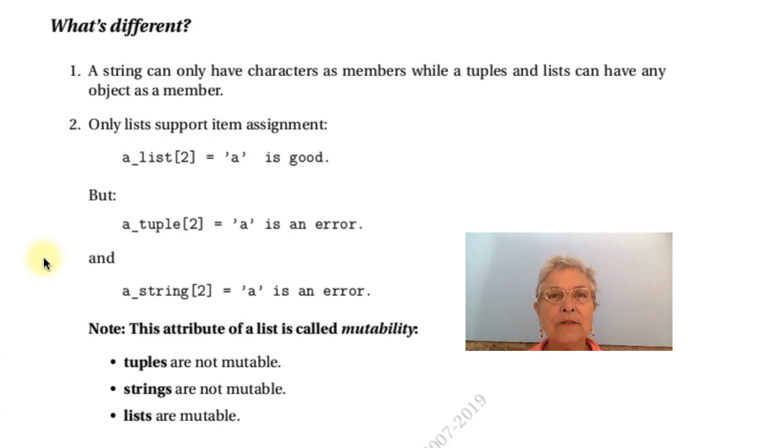So we looked at all these facilities of our sequences, the facilities that are the same for all three sequence types. Let's see what's different about them. Well, string is pretty obvious. They can only have characters as elements. While lists and tuples can have absolutely any object. Lists and tuples can have other lists and tuples inside. Objects of your own classes. Anything, anything, anything. Dictionaries.